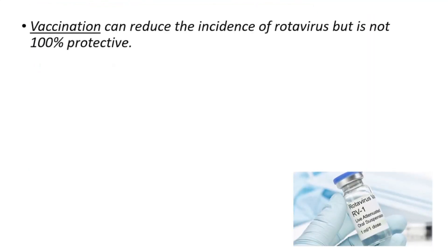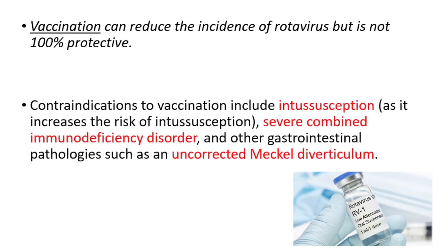We have an oral vaccine for rotavirus. Vaccination can reduce the incidence of rotavirus, but is not 100% protective. There are some contraindications for this vaccine, and those are intussusception, severe combined immunodeficiency disorder, and other gastrointestinal pathologies such as an uncorrected Meckel's diverticulum.